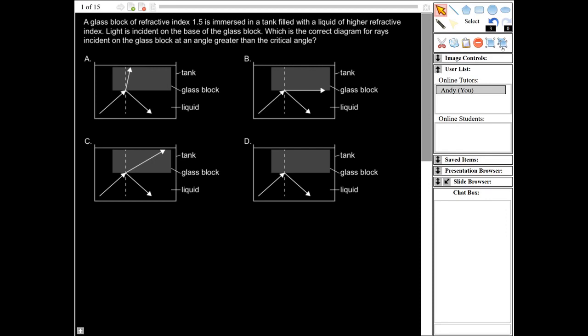If we have a look at this question here, we can see the glass block of refractive index 1.5 is immersed in a tank filled with a liquid of a higher refractive index. So this liquid here has a higher refractive index than the glass block. Since we're moving from the more dense material to the less dense material, we would expect any refraction to occur bending away from the normal. And should the angle be greater than the critical angle, we would expect total internal reflection.